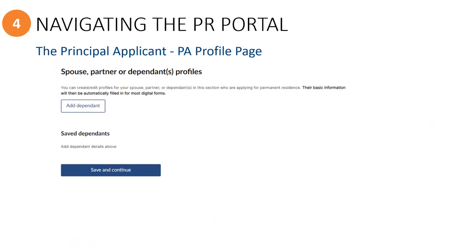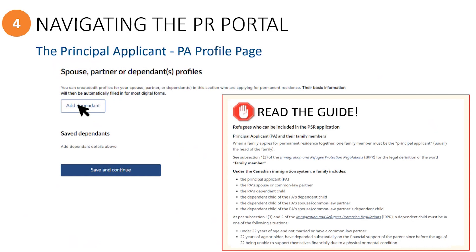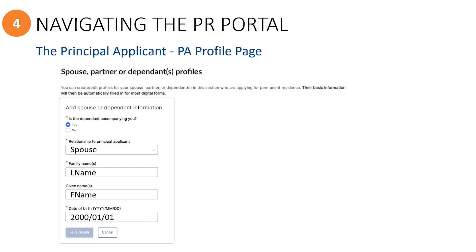Scrolling to the bottom of the principal applicant's profile page, you will see where to add each of the principal applicant's dependents to the application. You will click on the Add Dependent button for every family member that needs to be included. Be sure to read the IMM 6000 guide to know who can be included as a family member on this application. When the input box opens, you will be required to provide basic information such as the name and date of birth.